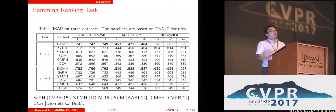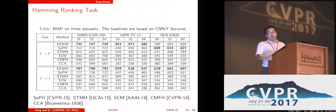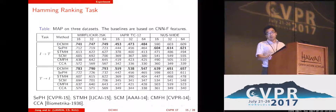We perform experiments on real datasets. First, we perform Hamming ranking tasks on three datasets and report the mean average precision. We can find that our model outperforms all the other baselines.